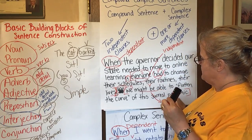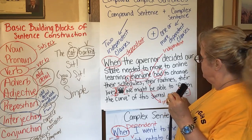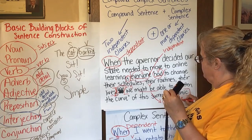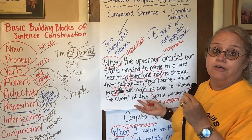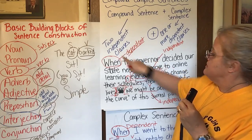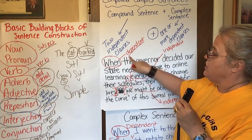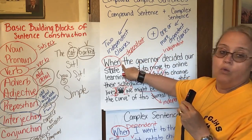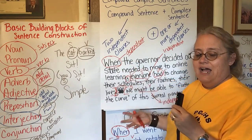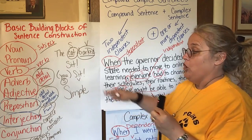So I have one dependent clause, one independent clause, and then a second independent clause. Does that meet my criteria? Two independent clauses — one, two — plus one or more dependent clauses — I've got one right at the beginning. That's it!